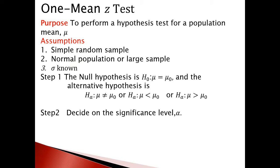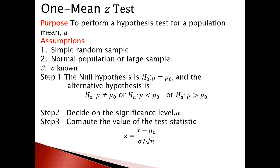Step three: we need to compute the value of the test statistic using the formula shown on screen. We need the value of x-bar, the value of mu-naught, sigma, and the sample size n. We can denote the computed value as z-naught.